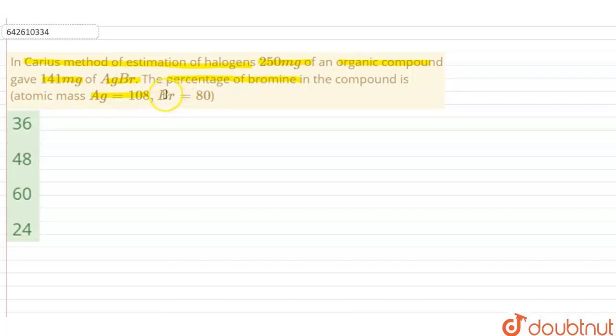So let us understand this Carius method. It is used for the determination of the amount of halogen present in a given compound. It determines the amount of halogen, which is denoted as X, in a given organic compound sample.